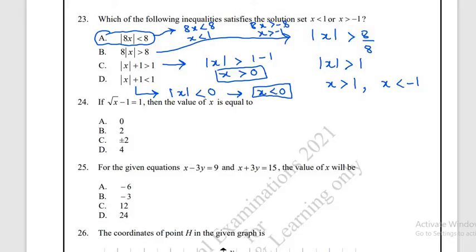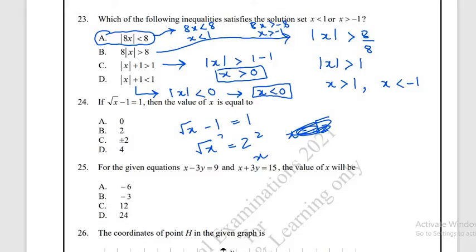Question number 24: solve √x − 1 = 1. Adding 1: √x = 2, squaring both sides gives x = 4. The correct answer is option D.